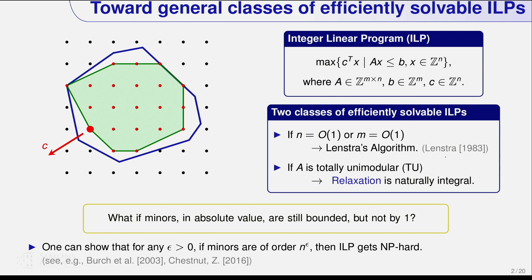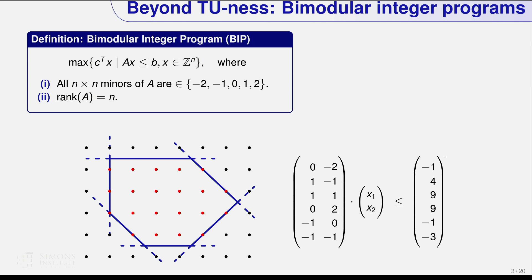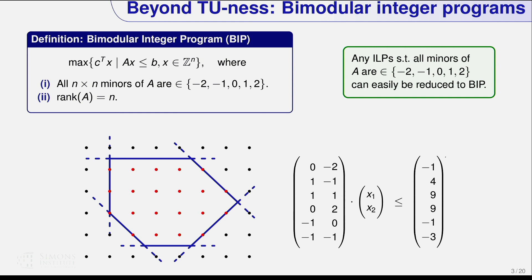Today I'd like to talk about the bimodular case — where the minors are bounded between minus two and two — but it's actually a bit more general. I require only that the n-times-n minors, so minors containing all of the columns, are between minus two and two, and that A has full column rank. This case includes the case where all minors are bounded between minus two and two. I'll call these bimodular IPs simply BIPs. In 2D, the relaxation can be half-integral, so it's not immediately obvious how to derive integer solutions.